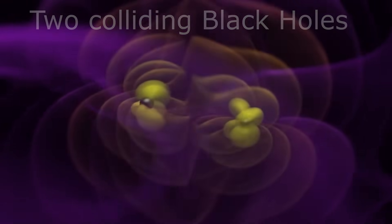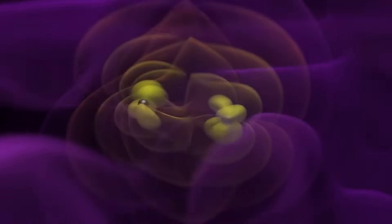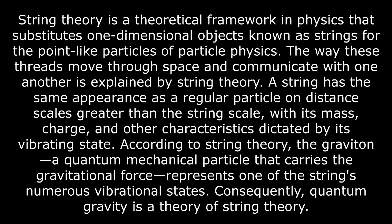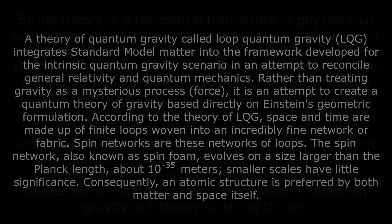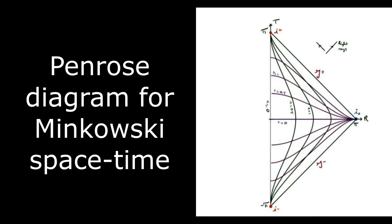Most theorists turn to string theory, which postulates that substance and spacetime originate from small vibrating strings, to resolve this profound conceptual problem. A smaller group investigated loop quantum gravity, which substitutes a network of interlocking loops for Einstein's general relativity's smooth spacetime. In both views, these essentially quantum building pieces somehow give rise to our familiar classical reality.